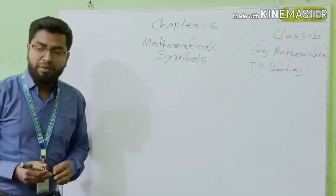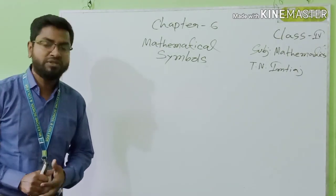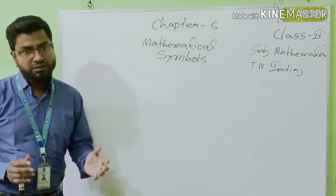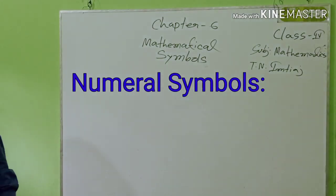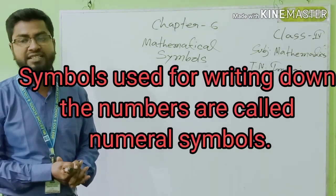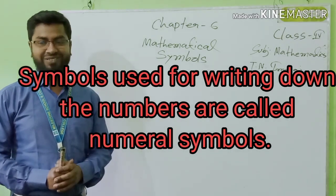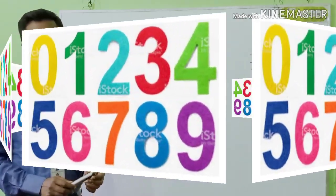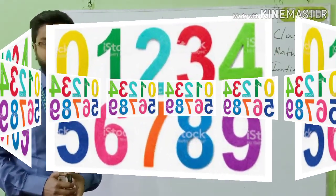For writing mathematics, we need to use some symbols. First, numeral symbols. What is a numeral symbol? Symbols used for writing down the numbers are called numeral symbols. They are: 0, 1, 2, 3, 4, 5, 6, 7, 8, and 9.